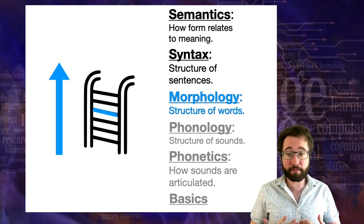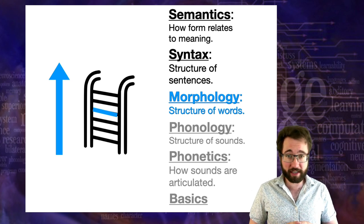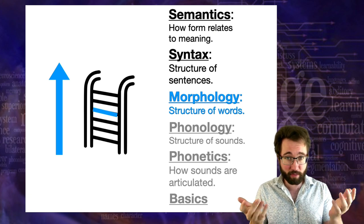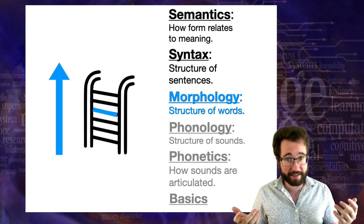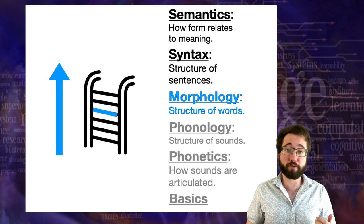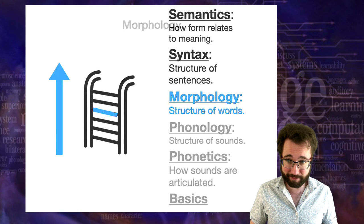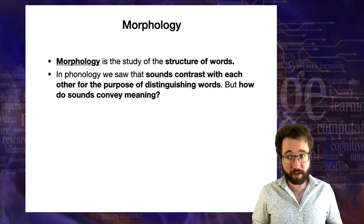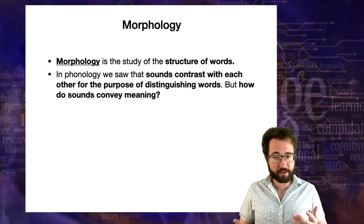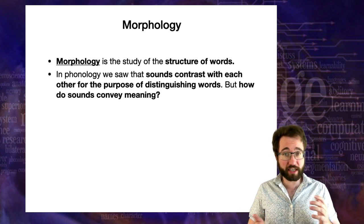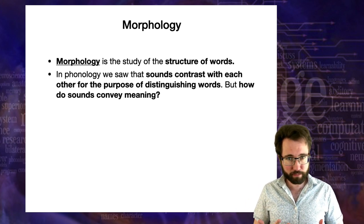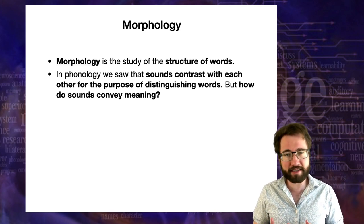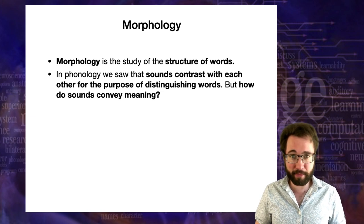This is particularly exciting because morphology is going to be where we're starting to make contact between sound and meaning. Remember, we can think of language as a set of signs — pairings of sound and meaning — and morphology is where that really starts to happen. Morphology is the study of the structure of words. In phonology, we saw that sounds contrast with each other in order to distinguish words. But in morphology, we have to ask in a more detailed way how sounds can convey meaning in language.